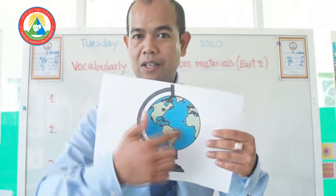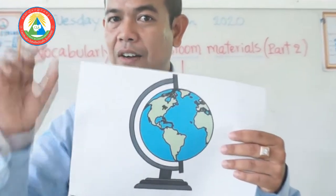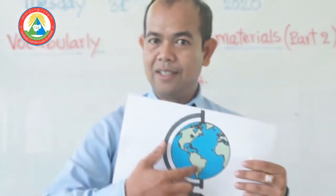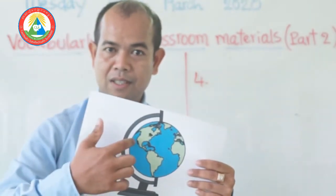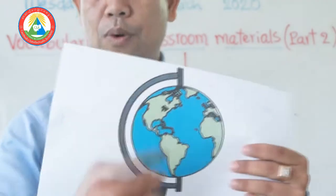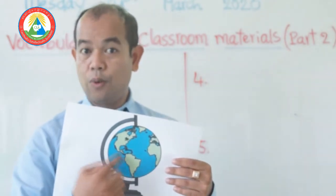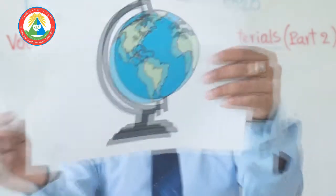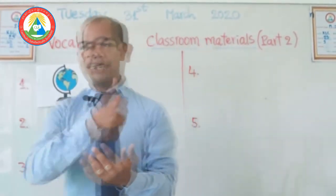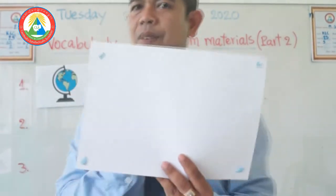You can find many countries and continents on this globe. For example, you can find the Asia continent, and within Southeast Asia you can find our country Cambodia. There are 11 countries in the Southeast Asia region.